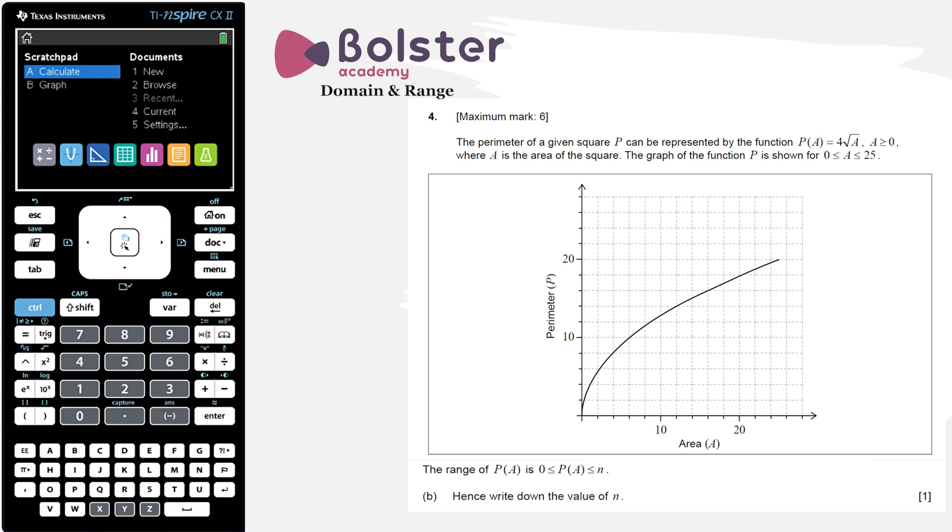It's good to start by identifying what are the domain and range in this question. The domain is all of the x values that go into the function. This is already defined in the question—it tells us that A, the independent variable, is between 0 and 25. We can see that clearly on the A axis from 0 to 25, this is where our graph exists.